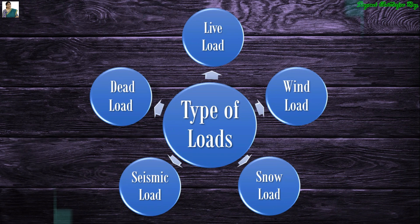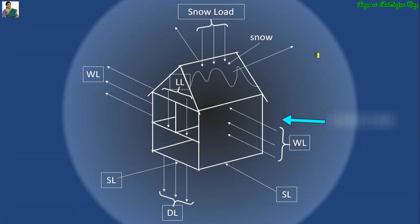Now we will see all of these five types of load in detail. Considering this structure, you can see the dead load which is acting downwards, the wind load which is acting on the structure, the live load which is acting on the floors and also at the roof, and the seismic load or earthquake load which is acting on this structure in X and Y direction.